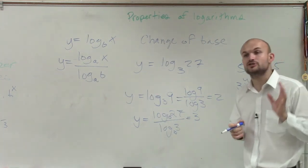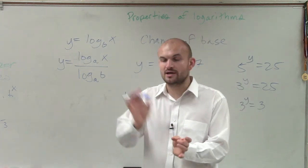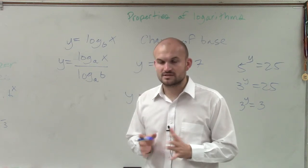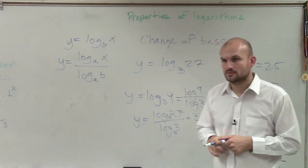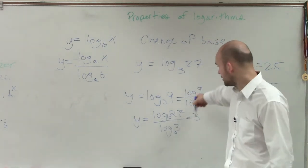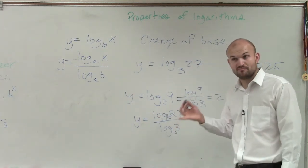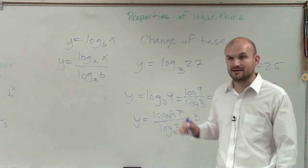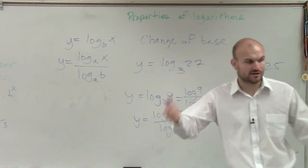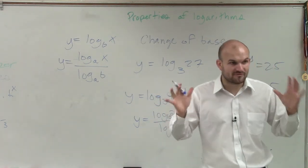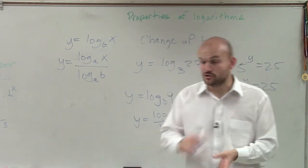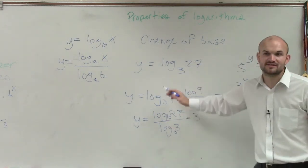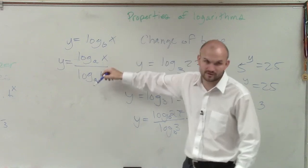If you have a calculator that lets you change the base, you can write in whatever base and value you want to evaluate. Not all calculators have that feature. If you can't change the base, you just use log of 27 over log of 3. The default base is 10 — they just don't write it. If your calculator doesn't allow you to change the base, your default is base 10, so you can solve base 10 problems. But if it's not base 10, you have to do the change of base formula — just take that over that and divide it.